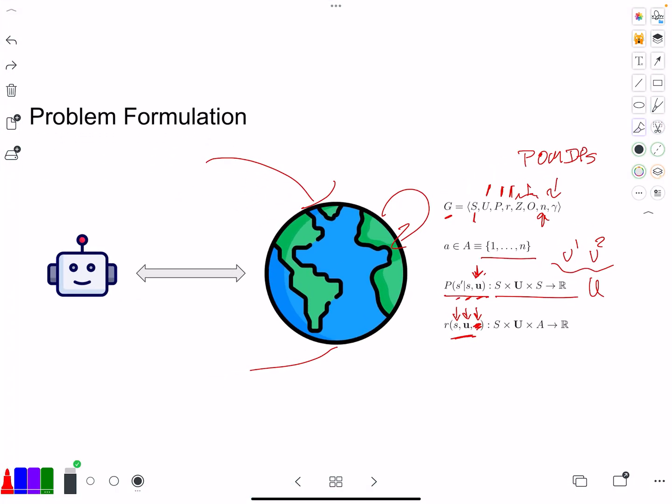So state, the action, the joint action U, and then the agent index there. Everything is the same other than this. That's the problem formulation that we want you to be aware of.